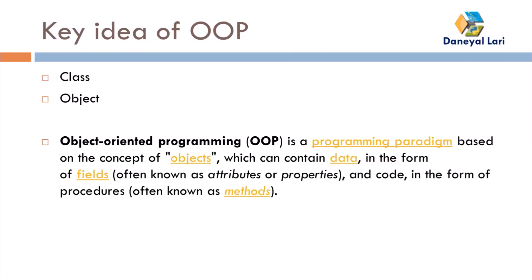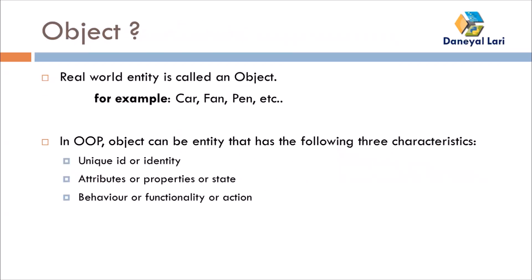An object is a real-world entity. In layman's terms, if you find anything near you that exists in the real world, you can say that is an object. For example, if you are using a phone, that is an object. You exist in the real world, so you are an object. A car, fan, pen — everything you find around you that is in existence is called an object.